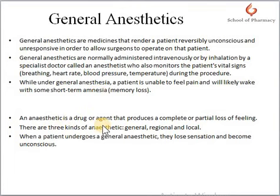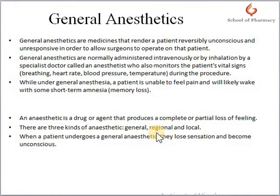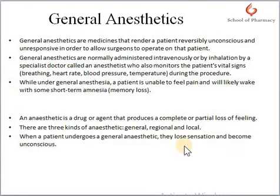Anesthetic drugs are agents that produce a complete or partial loss of feeling, and these are of three kinds: general anesthetics, regional anesthetics, and local anesthetics. When a patient undergoes general anesthesia, they lose sensation and become unconscious, but this is a reversible loss of sensation and consciousness.